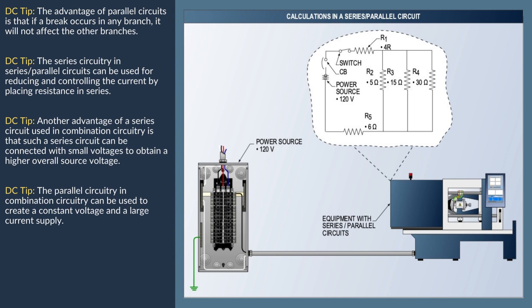In solving the current and voltage values for total resistance, the resistance of the parallel group must be calculated. In Step 1, finding total resistance RT: RT equals 1 divided by (1/5 ohms + 1/15 ohms + 1/30 ohms). Based on this formula, RT equals 1 divided by (6/30 + 2/30 + 1/30).